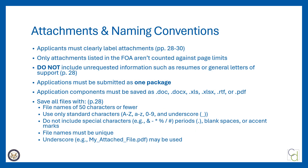Moving on to attachments and naming conventions. Applicants must clearly label all attachments — see pages 28 through 30 of the FOA for more details. Only attachments listed in the FOA are not counted against page limits. Applicants should not include any information that's not required or requested, such as resumes or general letters of support. You are asked to include letters from partners as well as key staff experience and job descriptions for key personnel. Applications must be submitted as a single package and application components must be saved as .doc, .docx, .xls, .xlsx, .rtf, or .pdf. DOL will attempt to open a document but will not take any additional measures if there are problems with file corruption or compatibility with other file types.